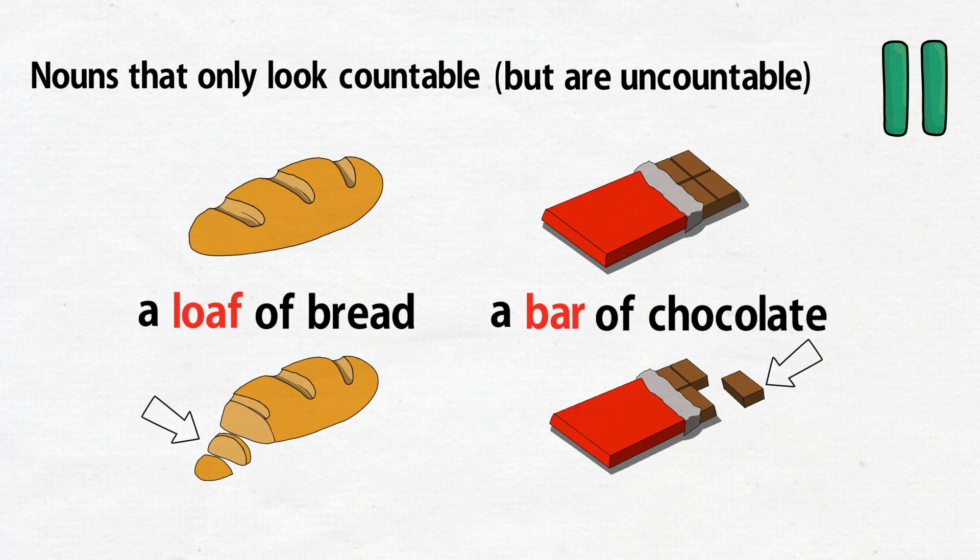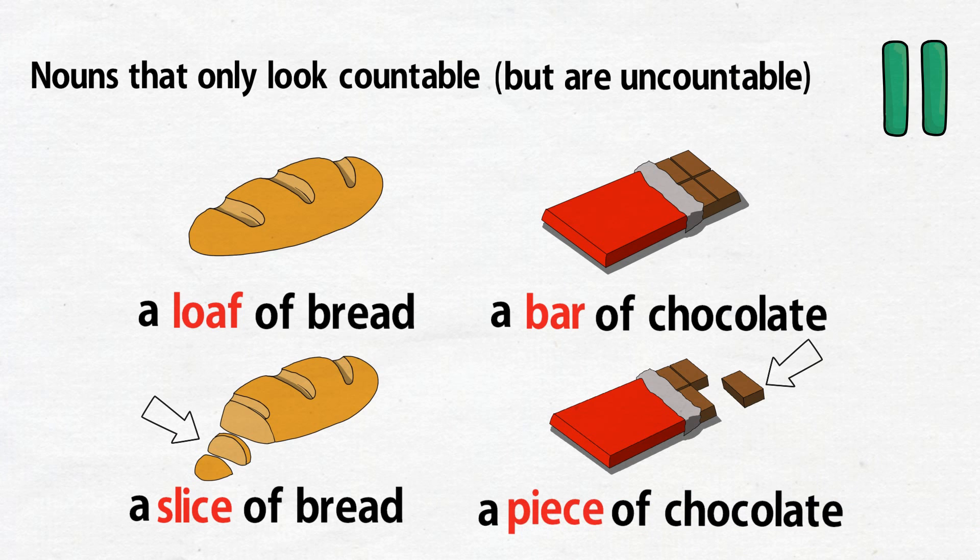A loaf of bread can be cut into two or three slices of bread. Most people cannot eat the whole bar of chocolate, but they can have a piece of chocolate. And there you go, that covers the basics of counting the uncountable nouns.